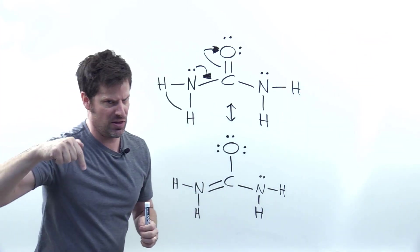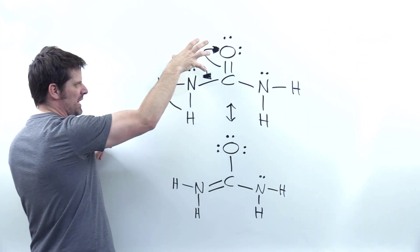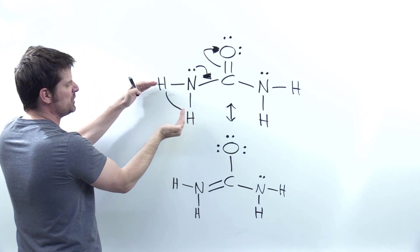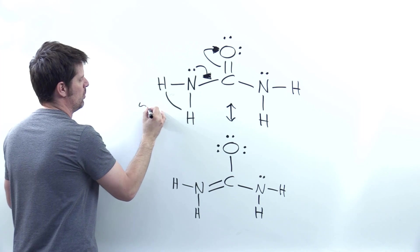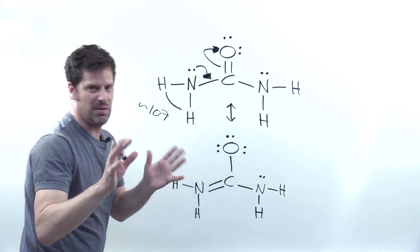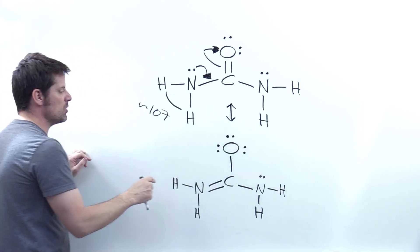We've learned elsewhere, link in the description below, that lone pairs take up a little bit more room, and hence would constrain or push that bond to be a little bit less than 109.5, somewhere around 107 or so, give or take maybe a little bit of wiggle room. But go down here.